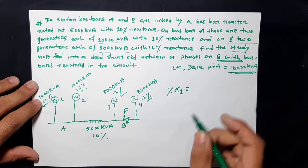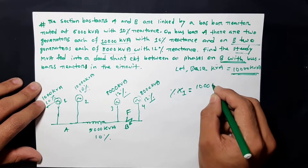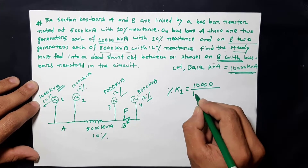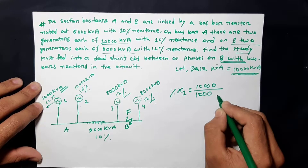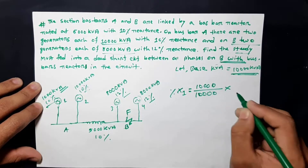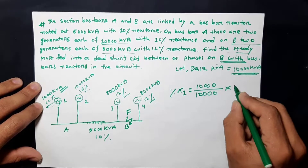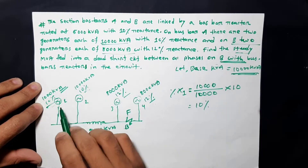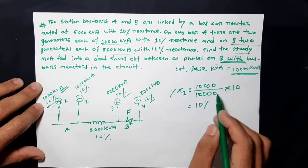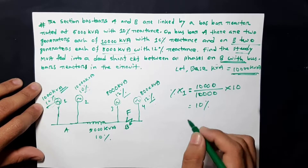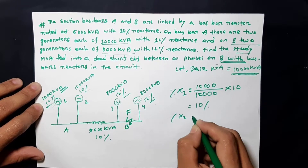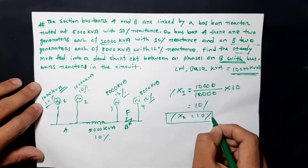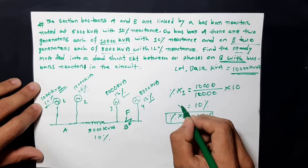Taking the base KVA as 10,000: Generator 1 — base KVA is 10,000, rated KVA is 10,000, so percentage X1 equals (10,000 / 10,000) × 10% = 10%. Generator 2 has the same values, so percentage X2 is also equal to 10%.